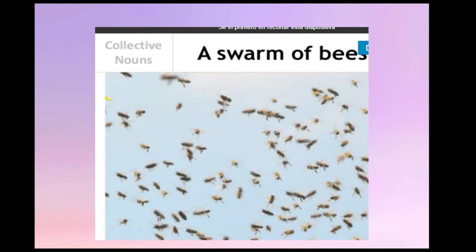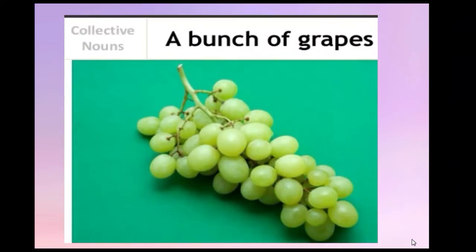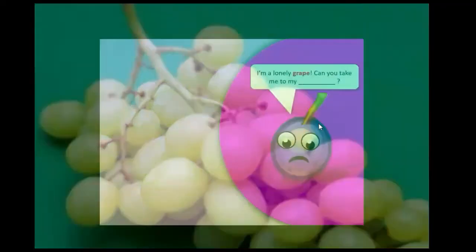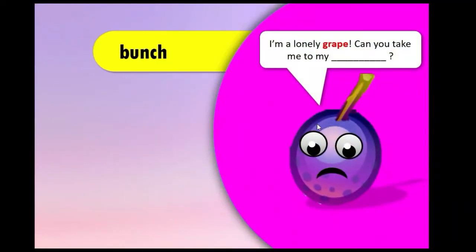In this one, we have a swarm of bees. We can say a bee individually, but when we have a swarm of bees, when there are a lot of bees, we can say this is a swarm — or 'enjambre' in Spanish. And as I told you, we have a bunch of grapes. That is another example.